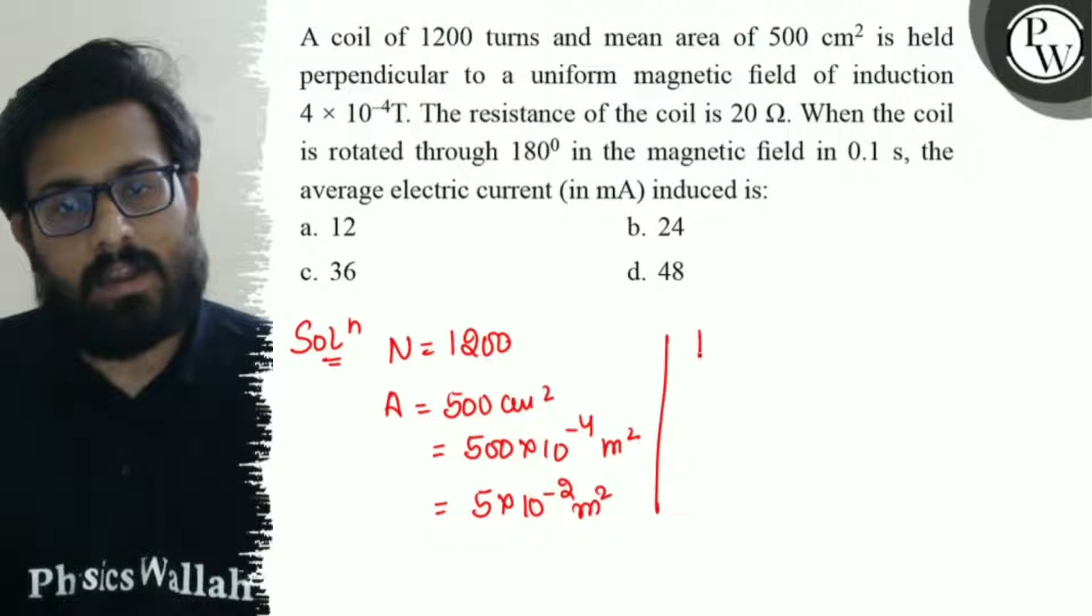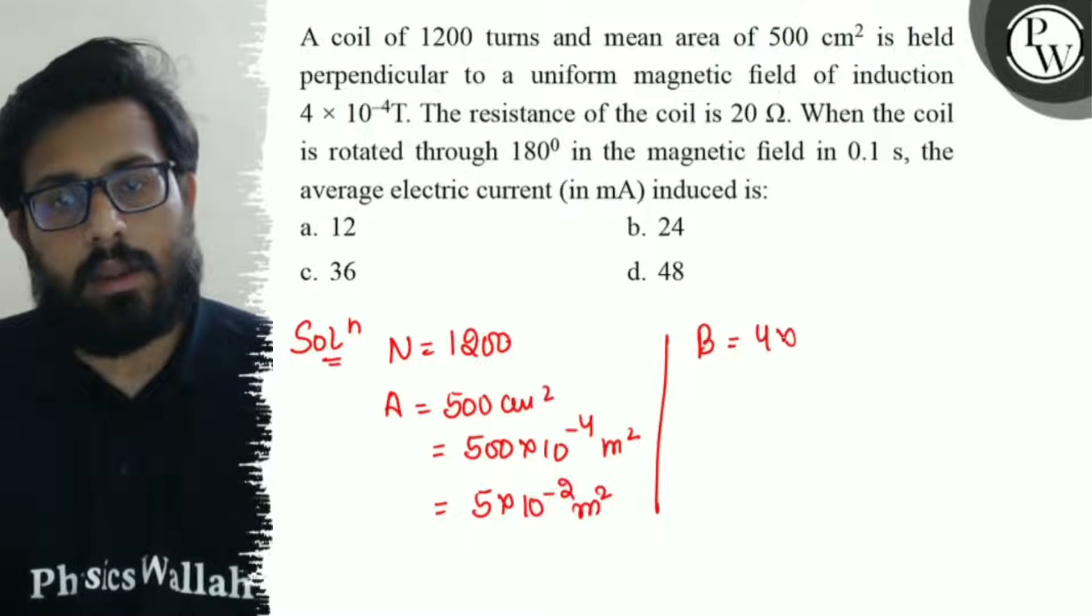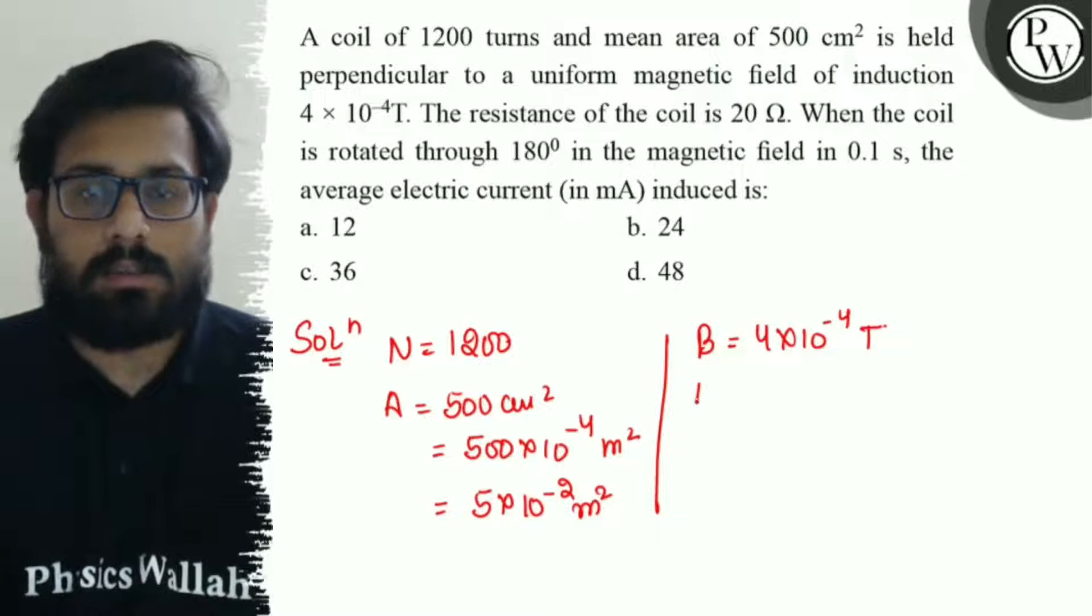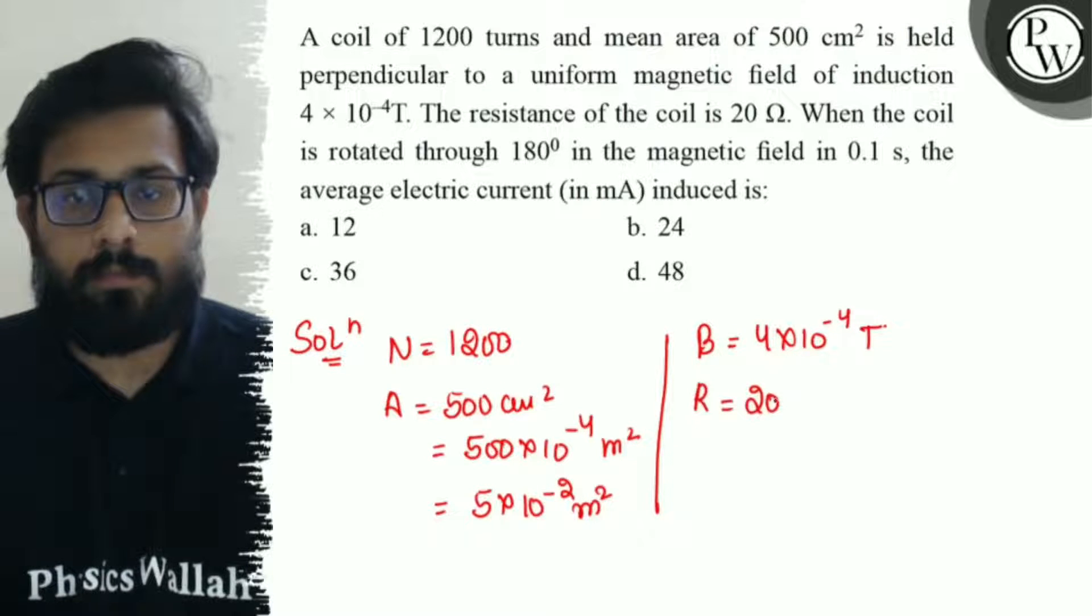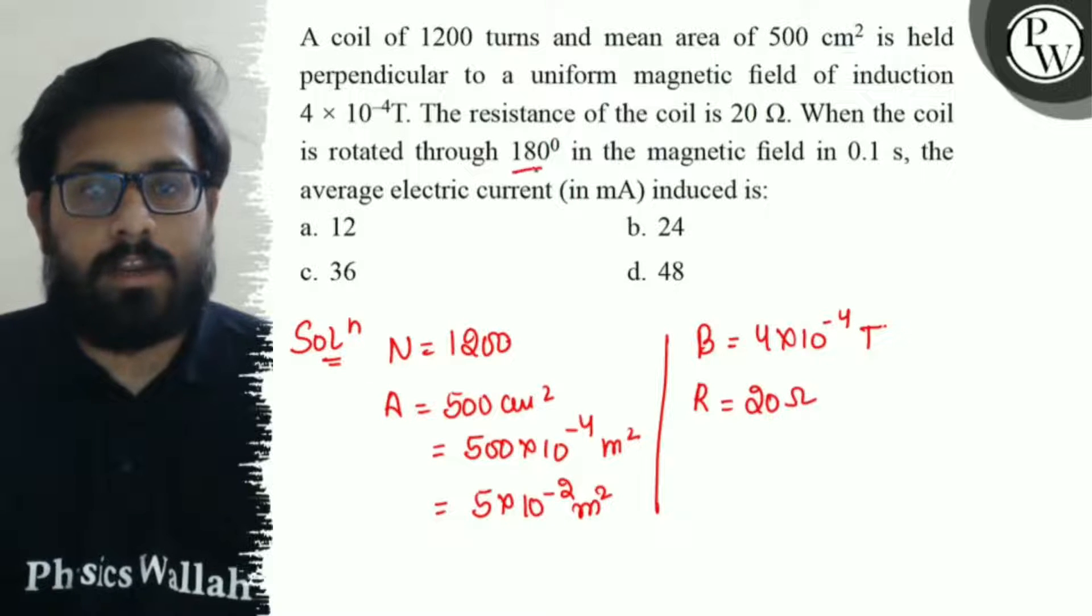Then the value of the magnetic field is given as B = 4×10⁻⁴ T, and the resistance of the coil is given as 20 Ω. Now when the coil is rotated through 180 degrees...